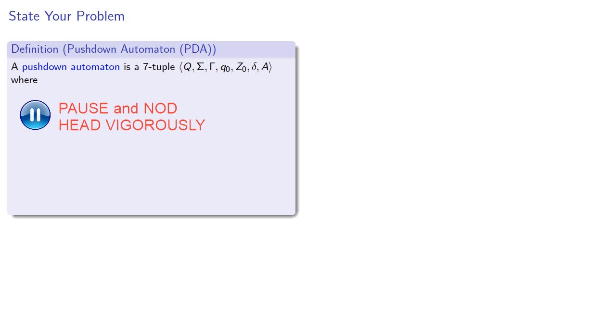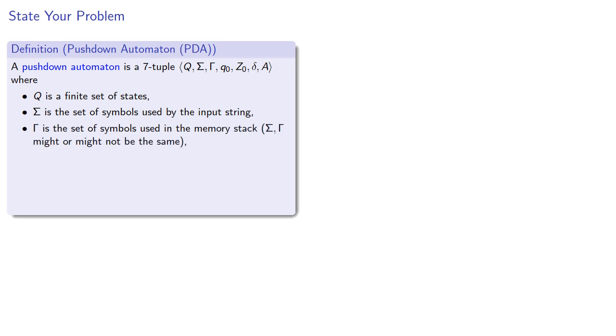A pushdown automaton is a 7-tuple, where Q is a finite set of states, Σ is the set of symbols used by the input string, Γ is the set of symbols used in the memory stack, and Σ and Γ might or might not be the same, q₀ is the initial state, z₀ is the initial symbol on the stack, and there's some set of our states, that's our set of accepting states,